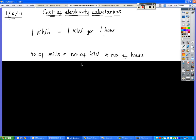So if you want to calculate what the number of units is, remember number of units is really the same as saying number of kilowatt hours, they are the same thing. Number of units or number of kilowatt hours is the number of kilowatts multiplied by the number of hours. So that's what we use to calculate how many units of electricity we've used.